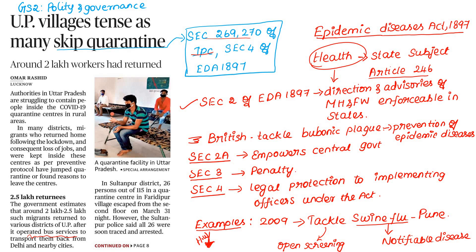This is the Epidemic Diseases Act 1897. Section 2 of the Act has been invoked by all states. In this section, directions and advisories of the Ministry of Health and Family Welfare are enforceable in states. The Central Government's Health Ministry guidelines and directions are applicable under this section.